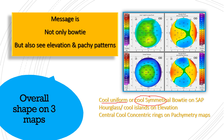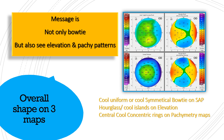On the elevation map, an hourglass appearance is a normal pattern, in addition to the cool eye lens, which will be described in the coming slides. There are also cool central concentric rings on the pachymetry maps, which are also a normal pattern. So don't only look at the sagittal map — do look at the pachymetry map and the two elevation maps. They all together have normal or abnormal patterns.